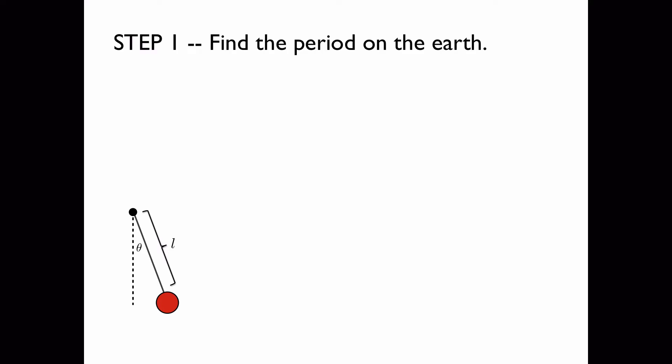Step one is to find the period on the earth. We know the length, and so this is pretty easy. We have the formula for the period, which notice doesn't involve the mass or the amplitude. So if we had the same pendulum, but it was twice as heavy, the period would be the same, which is somewhat surprising.